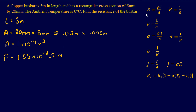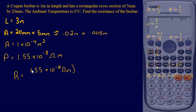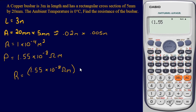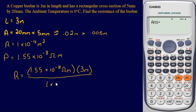Looking at our equation: R equals resistivity times length divided by area. We have all those values, so we can plug and chug. That's 1.55×10⁻⁸ ohm-meters multiplied by the length of 3 meters, divided by the area of 1×10⁻⁴ meters squared.